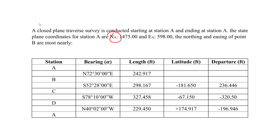The northing at A is 1475.00 and the easting at A is 598.00. This is our benchmark essentially. These values depend on the state plane coordinate system, which uses a Cartesian coordinate system and allows us to do a plane survey to find our relevant point, which is point B.